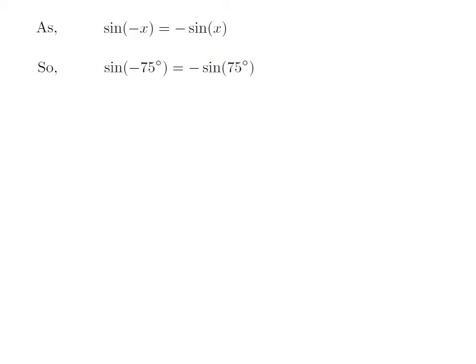Let us apply the above identity for sine of minus 75 degree. Here, x is 75 degree. So, sine of minus 75 degree is equal to minus sine of 75 degree.